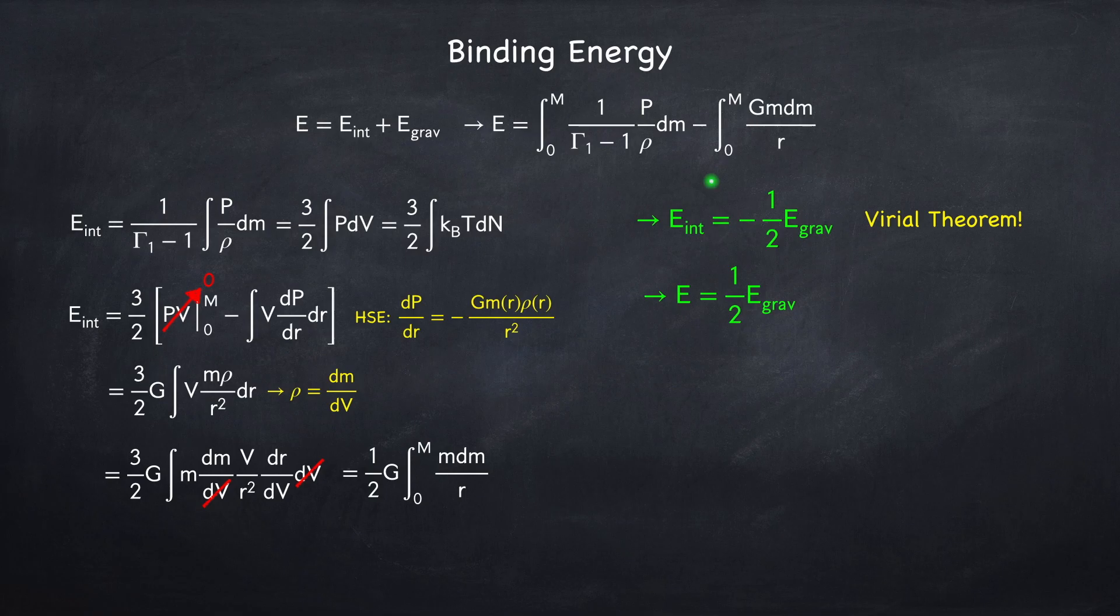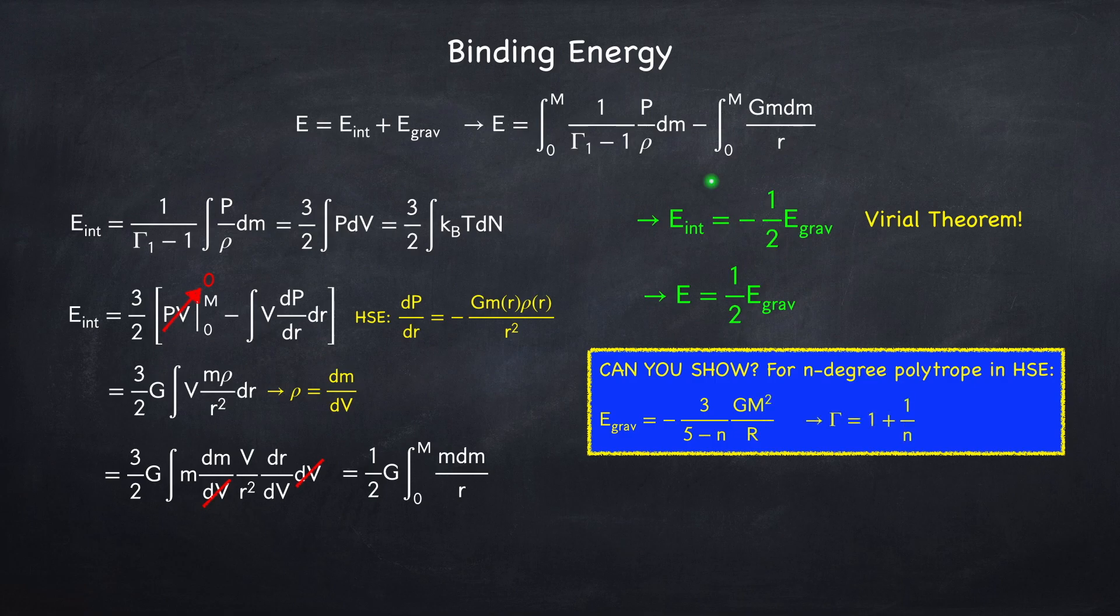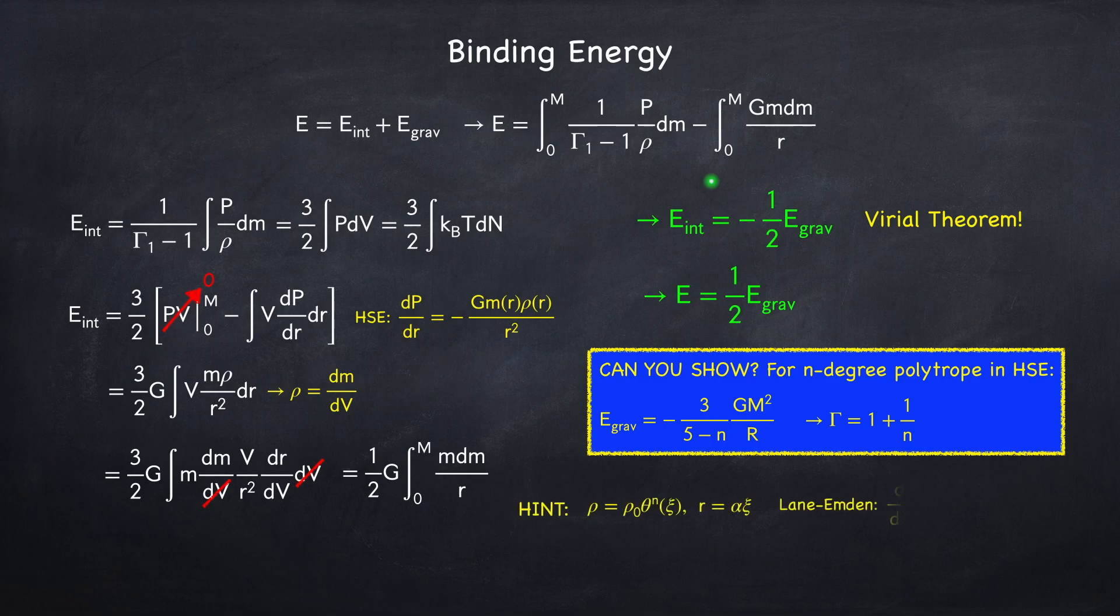I'll leave it as an exercise for you to see if you can show that this integral for an n-degree polytrope is equal to 3 divided by 5 minus n times gm squared over r, where n is the polytrope index, m is the total mass of the star, and r is the radius of the star. Showing this requires you to be a little bit clever, but I'll give you a hint. Use the polytrope relations we found in Stellar Physics 3b.